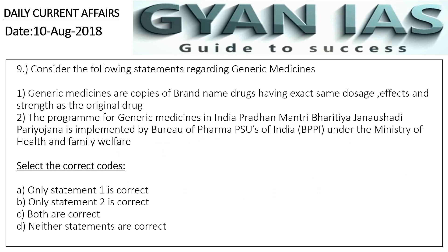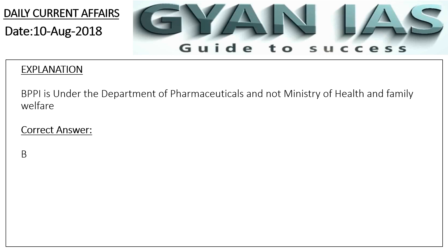Question 9: Consider the following statements regarding generic medicines. Statement 1: Generic medicines are copies of brand-name drugs having the exact same dosage, effects, and strength as the original drug — this is correct. Statement 2: The program for generic medicines in India, Pradhan Mantri Bharatiya Jan Aushadhi Pariyojana, is implemented by the Bureau of Pharma PSUs of India (BPPI) under the Ministry of Health and Family Welfare — this is wrong. BPPI is under the Department of Pharmaceuticals, not the Ministry of Health.